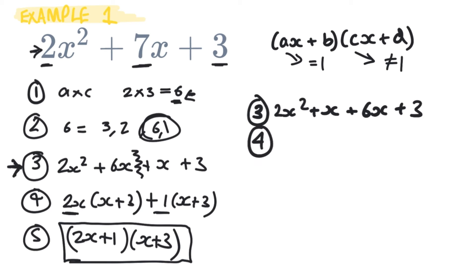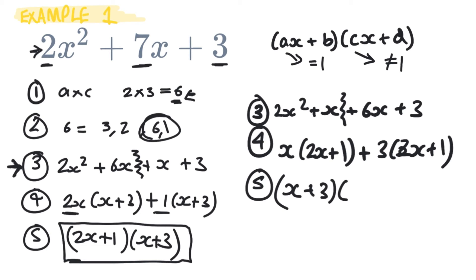And then if we redo step 4 we can write it as, if we split it into 2 we can write it as, what comes out of here? Well we've got x and that leaves us with 2x + 1. And then we've got what goes into these two? Well we've got 3 and that leaves us with 2x + 1. And of course this will then give us the same step 5. So it really doesn't matter which way around you write it.